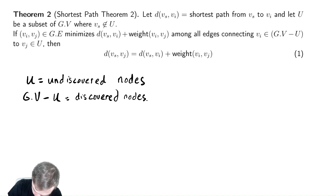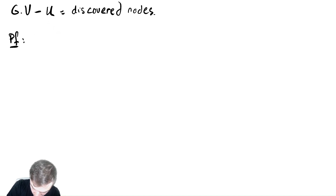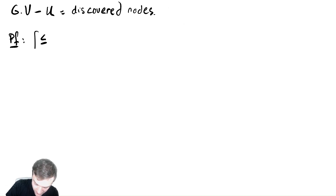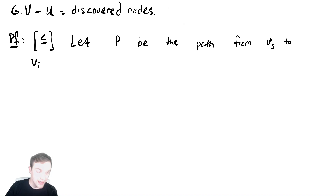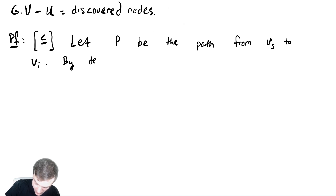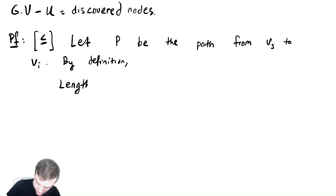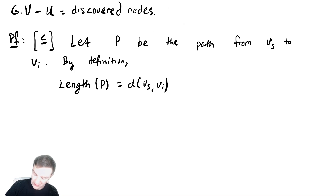Let's begin our proof by proving that it is less than or equal to. This is actually very easy. We're going to let P be the path from Vs to Vi — the shortest path from Vs to Vi. By definition, we know that the length of P must equal the length of the shortest path from Vs to Vi, which is what D was defined to be.